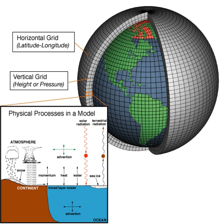AOGCMs combine the atmospheric and oceanic submodels, removing the need to specify fluxes across the ocean surface interface. These models are the basis for predictions of future climate, such as those discussed by the IPCC. AOGCMs internalize as many processes as possible and have been used to provide predictions at a regional scale. While simpler models are generally more amenable to analysis, AOGCMs may be nearly as hard to analyze as the climate itself.